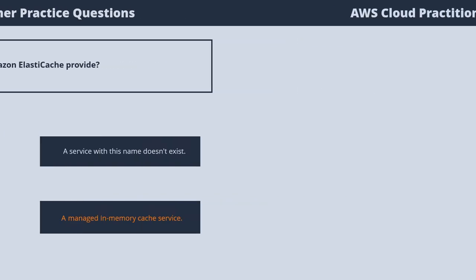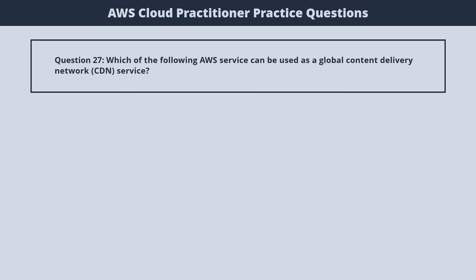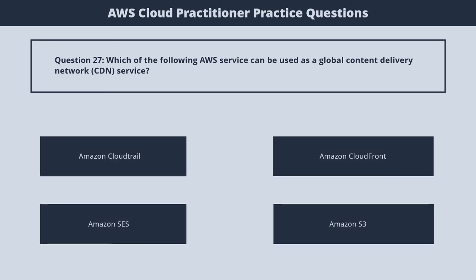Question 27. Which of the following AWS services can be used as a global content delivery network service? 1. Amazon CloudTrail. 2. Amazon CloudFront. 3. Amazon SES. 4. Amazon S3. The correct answer is 2. Amazon CloudFront.